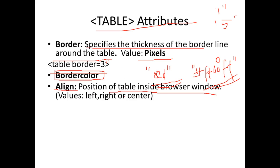The align attribute is used for the table to control alignment — whether to align it left, whether to align it right, or whether to align it at the center of the particular table.